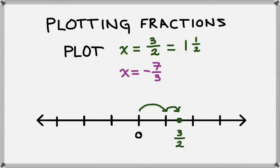Let's plot another one. How about x equals negative 7 thirds? Well, since this number is negative, we'll be going over to the left. Let's rewrite it as a mixed number. We get negative 2 and 1 third.